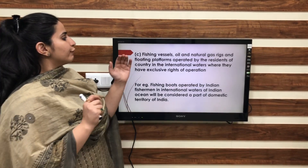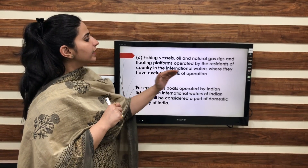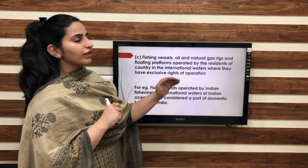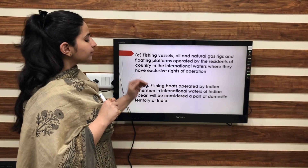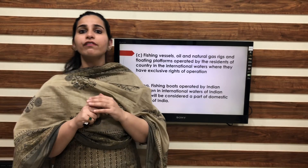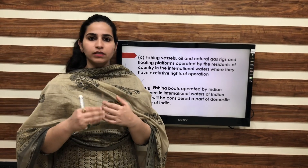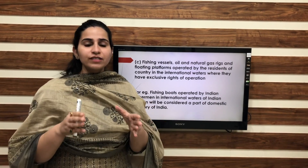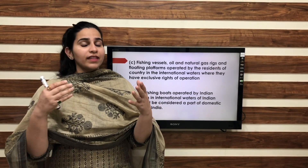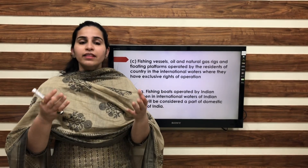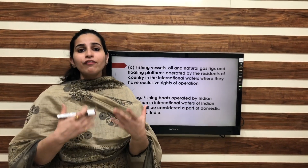The last point is fishing vessels, oil and natural gas rigs, and floating platforms operated by residents of a country in international waters where they have exclusive rights of operation. For example, fishing boats operated by Indian fishermen in the international waters of the Indian Ocean will be considered as part of the domestic territory of India. So, domestic territory is not only the geographical territory — it also includes international waters where our country has exclusive rights of operation.